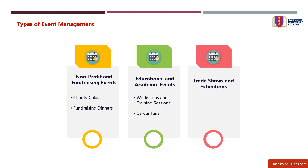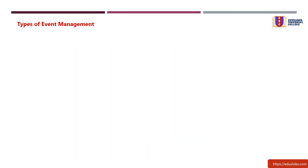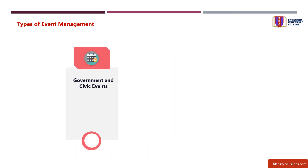7. Trade Shows and Exhibitions: This may include Trade Shows — industry-specific events where businesses showcase their products and services — and Exhibitions — displays of art, culture, technology, or specific themes. 8. Government and Civic Events: This may include Inaugurations — events marking the commencement of a new government office or facility — and Public Awareness Campaigns — events to inform and engage the public on civic matters.